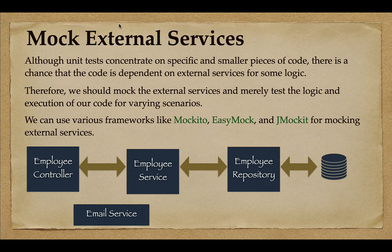The next best practice is to mock external services. When unit testing, we focus on a specific and smaller piece of code, but that code may depend on external services. For example, when unit testing an EmployeeController that depends on EmployeeService and EmailService, we need to mock those dependencies. To mock external services we can use frameworks like Mockito, EasyMock, or JMock. In this course we are going to use the Mockito framework to mock dependencies.